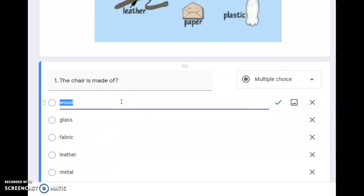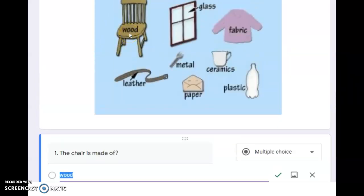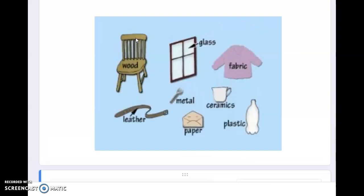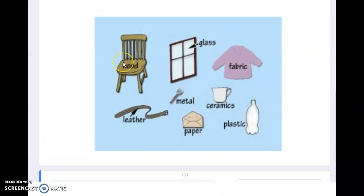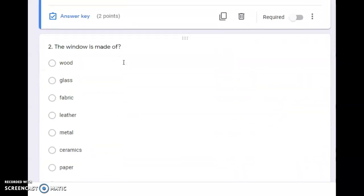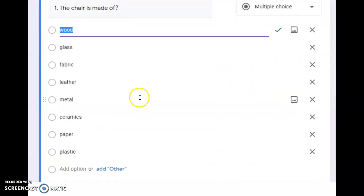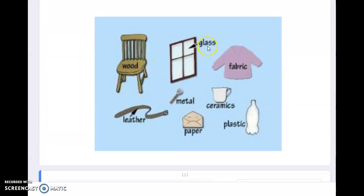This chair is not made of leather, not made of glass, not made of plastic, not made of metal, not made of ceramics, not made of paper. This chair is made of wood. Question two: the window is made of what? This is very obvious that you will see the materials used for this object, but in the real test you will not see the names of the material.